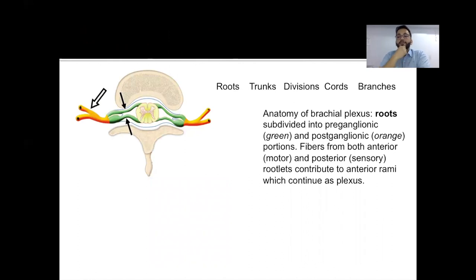Coming to the anatomy of brachial plexus, we know that when we speak of brachial plexus, we speak in terms of roots, trunks, divisions, cords and branches. But when we come to roots, we have to speak in two terms, pre-ganglionic part and the post-ganglionic part.